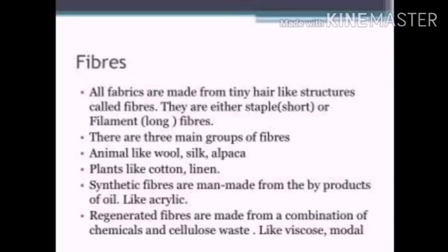There are three main groups of fibres. Animal fibres are a type of natural fibre, like wool and silk. Plant fibres are also natural fibres, like cotton and linen. Synthetic fibres are man-made from the by-products of oil, like acrylic. Regenerated fibres are made from a combination of chemicals and cellulose waste, like viscose modal.